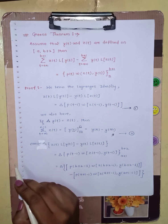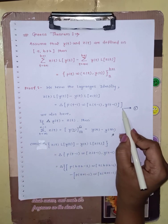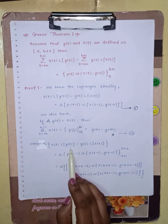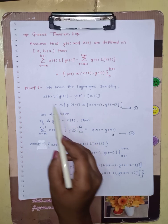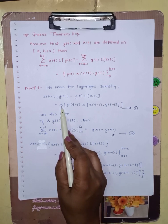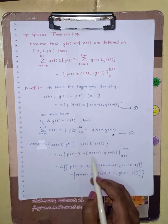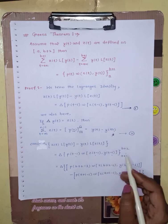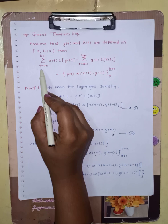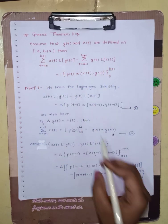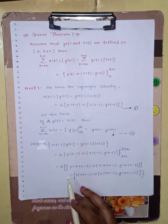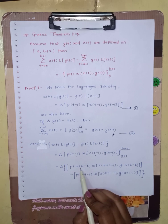Now we consider the left side of Lagrange's identity, equation 1: z(t)·L[y(t)] minus y(t)·L[z(t)] equals Δ of p(t−1)·ω(z(t−1), y(t−1)). To prove this identity, we apply the limits a+1 and b+1, and operating further we substitute t = b+2 as the upper limit and t = a+1 as the lower limit.